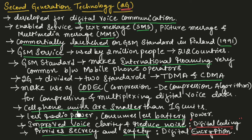The 2nd generation cell phone units are very much smaller compared to 1st generation cell phone units. In the 1st generation, the cell phones were very much bigger in size. So in 2nd generation, the cell phone units are smaller, which means they emit less radio power and consume less battery power.